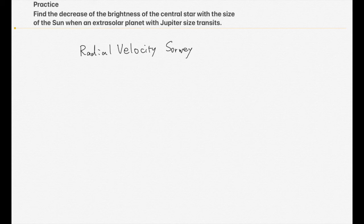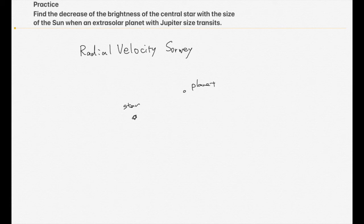So in this case we just make really simple figures. Actually the star — the central star — has a planet. This is an extrasolar planet. These two objects are rotating around the center of gravity, the center of mass.